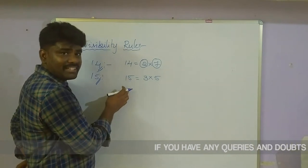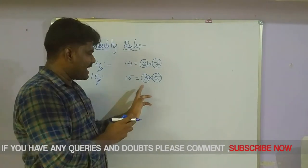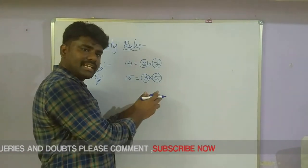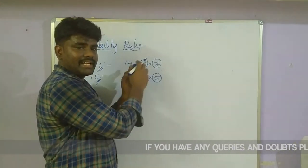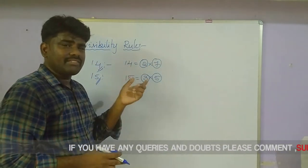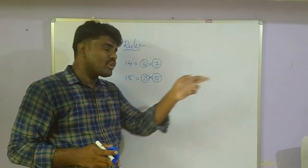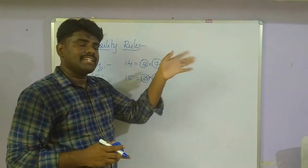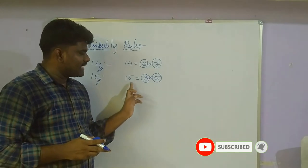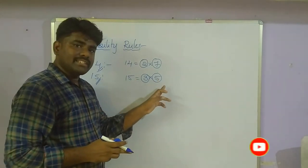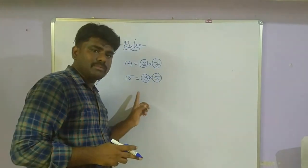For 15, to check if a number is divisible by 15, check if it is divisible by both 3 and 5. If both conditions hold, it is divisible by 15. For 14, if the number is divisible by both 2 and 7, then it is divisible by 14. Since divisibility by 2 means the number must be even, first check if it is even, then check the 7 divisibility rule. For 15, since divisibility by 5 means the last digit is either 0 or 5, first check that, then apply the 3 divisibility rule.